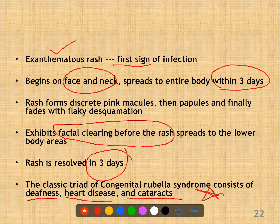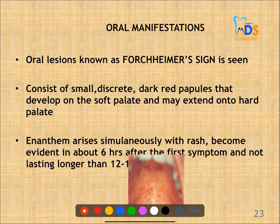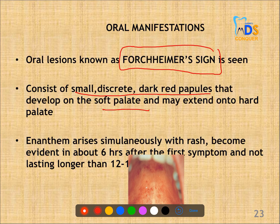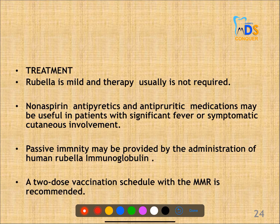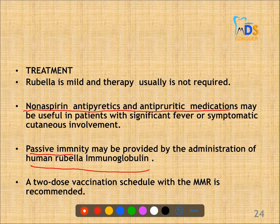The oral manifestation characteristic of rubella is Forchheimer's sign — small, discrete, dark red spots on the soft palate. The exanthem rash usually begins on the face and neck and spreads to the entire body within three days, becoming evident about six hours after the first symptom. Treatment is not always necessary, but non-aspirin antipyretics can be used. Passive immunity can be given with human rubella immunoglobulin, and a two-dose vaccination schedule with the MMR vaccine is recommended.